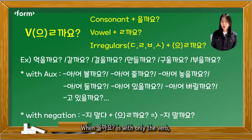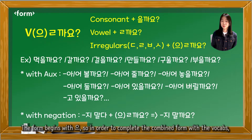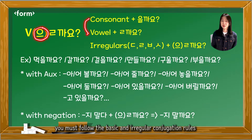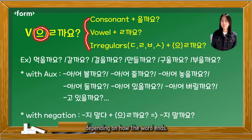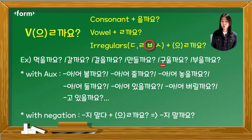When 을까요 is used with only the verb, it semantically functions as asking for consent. The form begins with 을. In order to complete the combined form with vocabulary, you must follow the basic and irregular conjugation rules depending on how the word ends. These are the examples: 먹을까요?, 갈까요?, 걸을까요?, 만들까요?, 구울까요?, 부을까요?